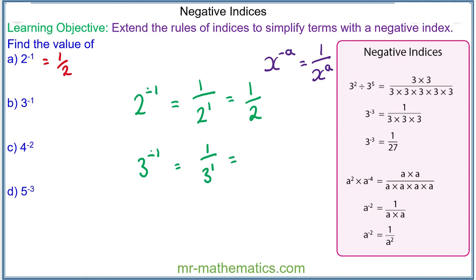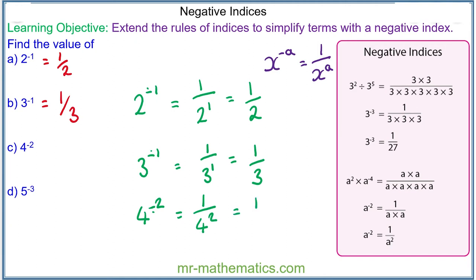3 to the power of 1 is 3, so it is 1 over 3. Question c: we have 4 to the power of negative 2. 4 squared is 16, so it simplifies to make 1 over 16.